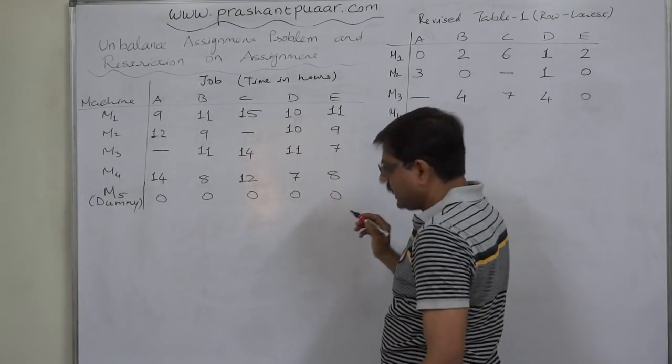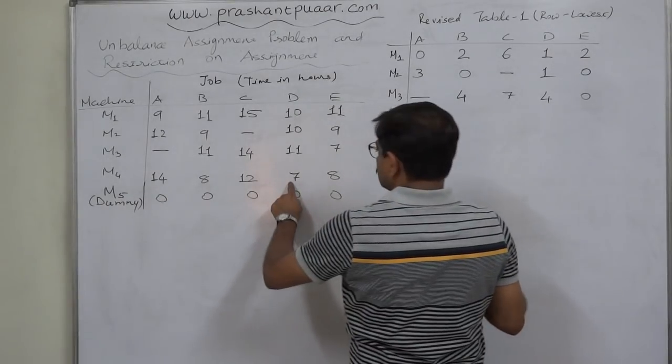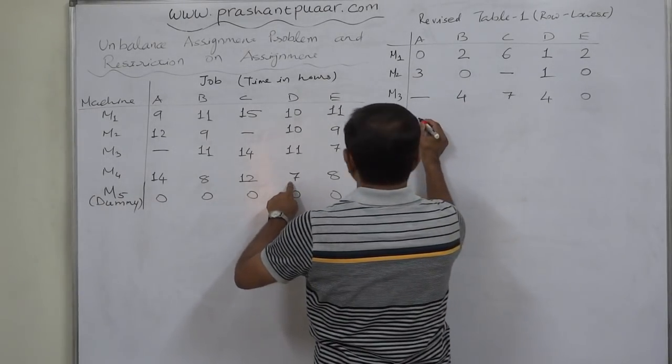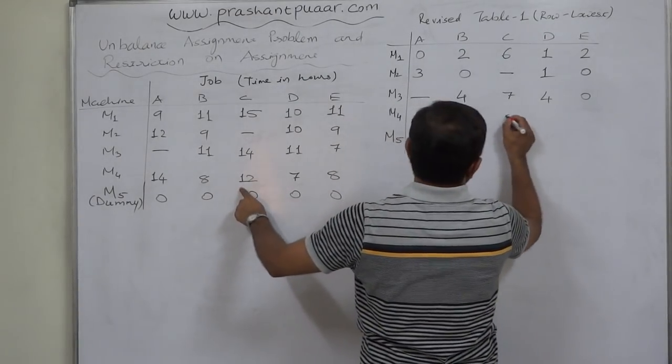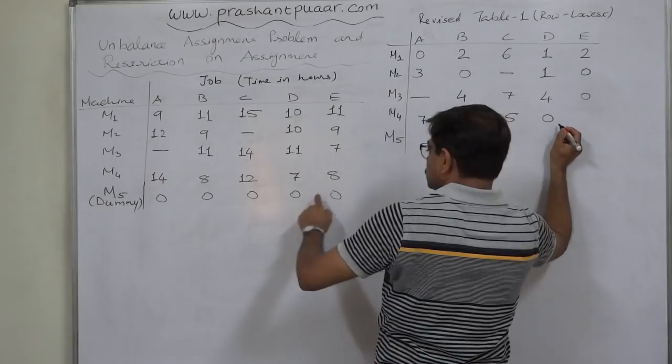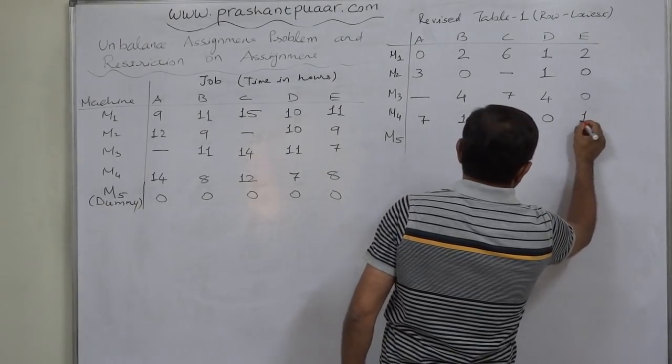In M4, the lowest value is also 7. 14 minus 7, 7. 8 minus 7, 1. 12 minus 7, 5. 7 minus 7, 0. 8 minus 7, 1.